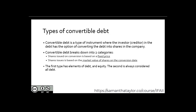Convertible Debt breaks down into two categories: first, Convertible Debt where the number of shares issued on conversion is based on a fixed price; or second, Convertible Debt where the number of shares issued is based on the market value of shares at the conversion date.